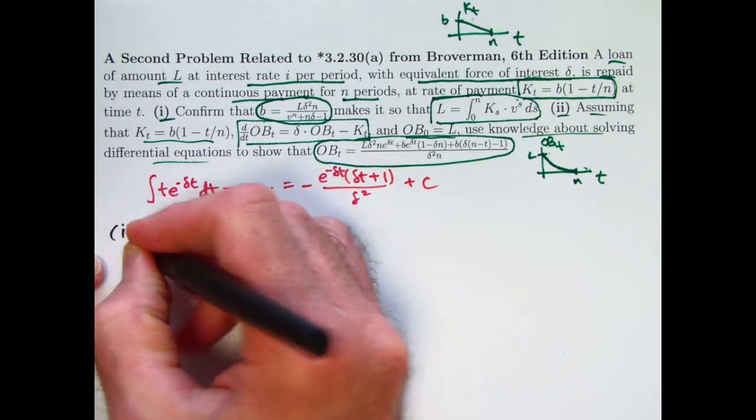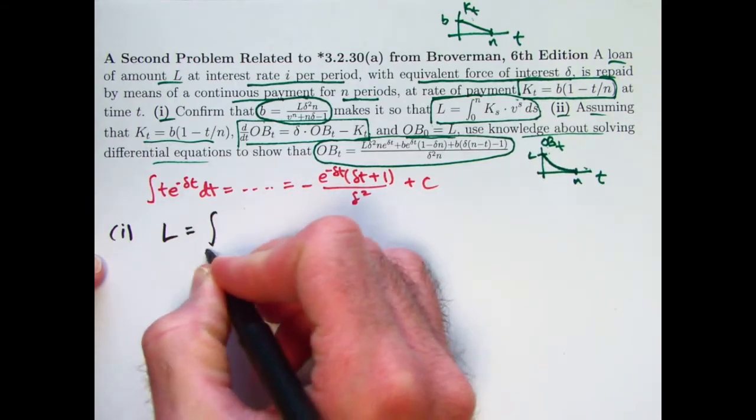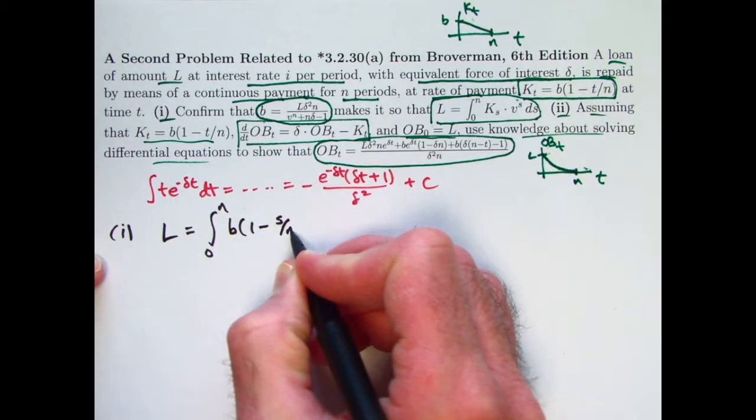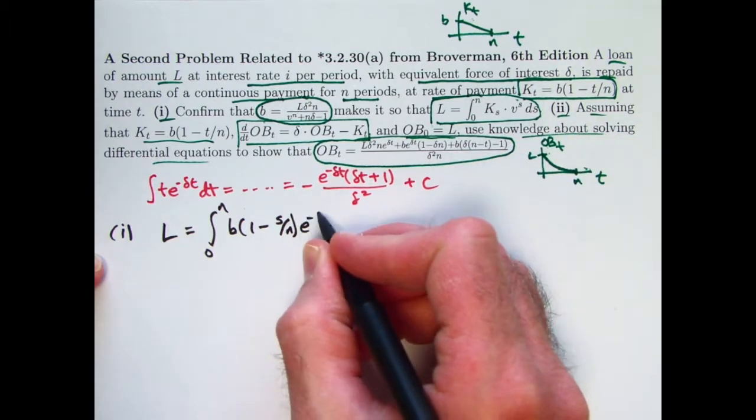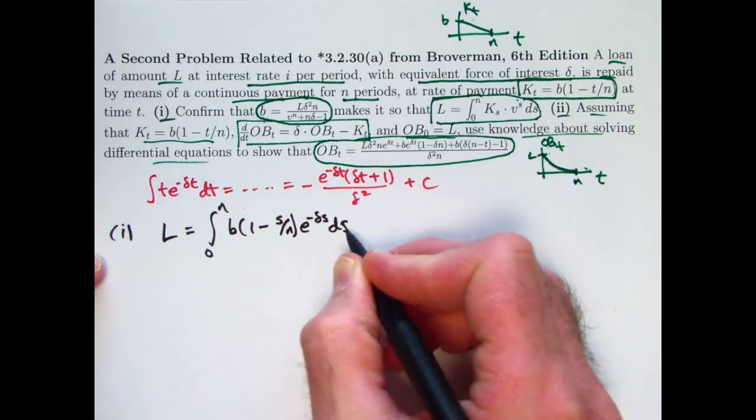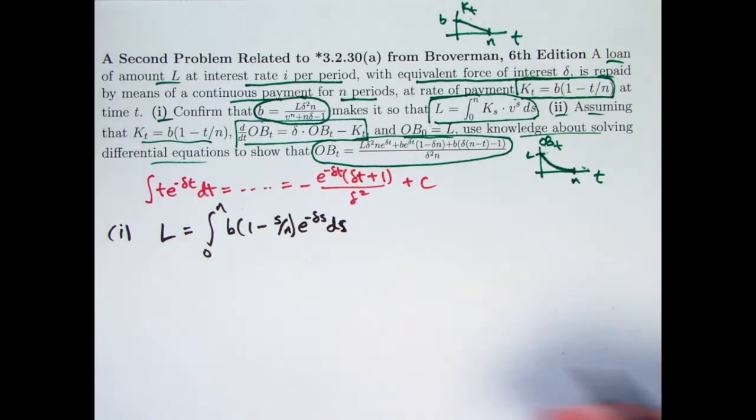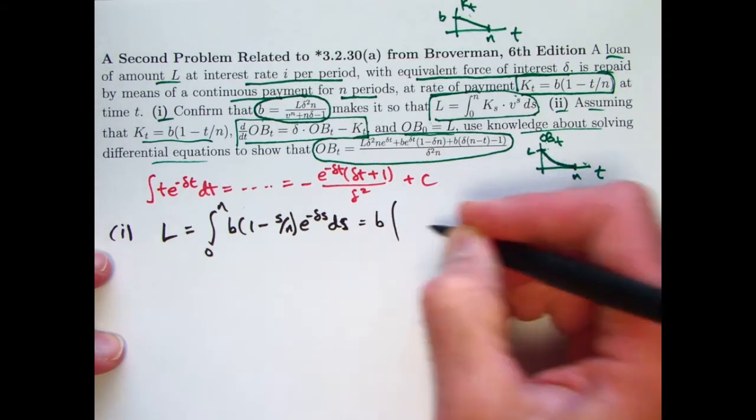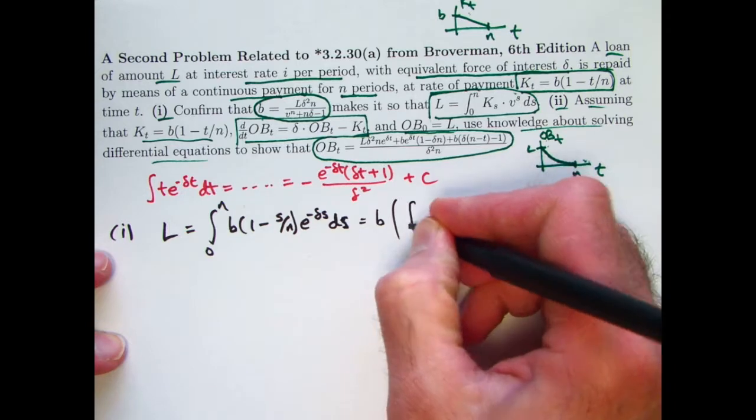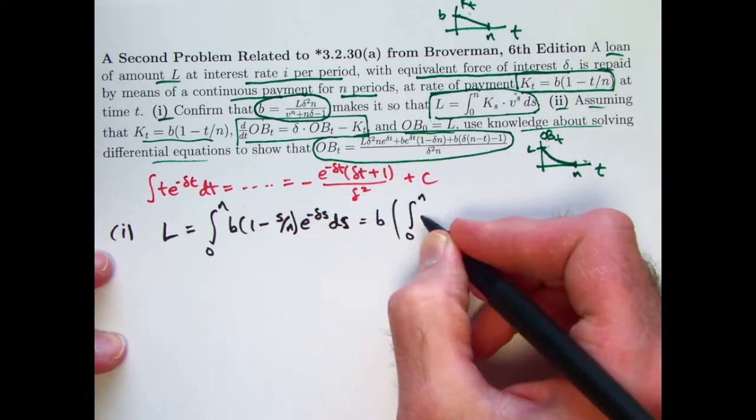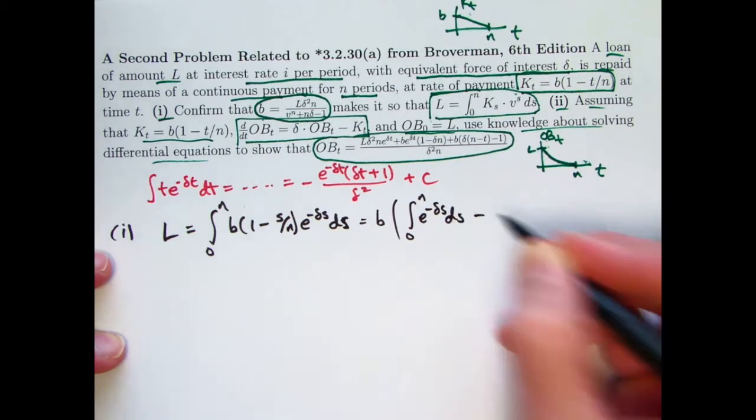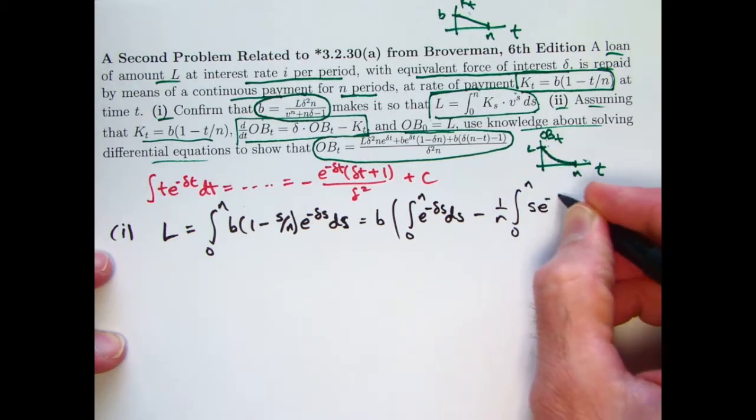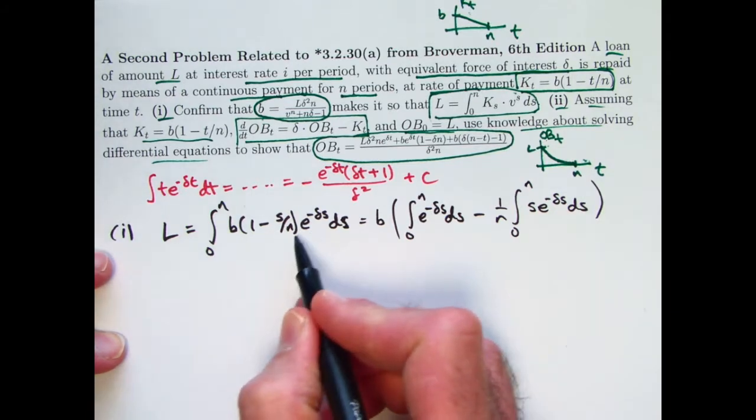Now let's go ahead and start part one. Let's go ahead and set L equal to this integral. Replace K_s with this thing with t equal to s. Now the fact that we're using the letter s instead of t here is not a big deal. Multiply by v to the s, which is the same as e to the negative delta times s. We're going to set this equal to each other here and solve for b. That's the goal. I'm going to go ahead and factor the b out and write what's inside the parentheses as two integrals, which is fine by linearity of integration. 1 times e to the negative delta s is this. And then I subtract, I can also pull out 1 over n here, the integral from zero to n of s e to the negative delta s, coming from multiplying these two things right there.